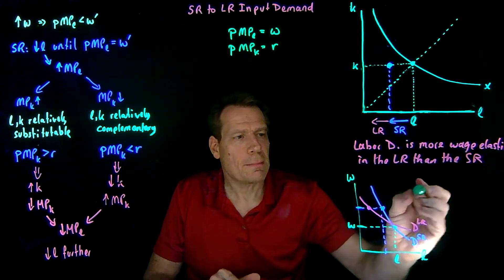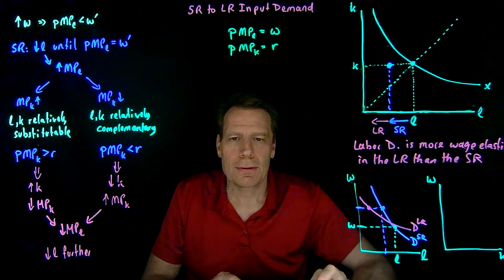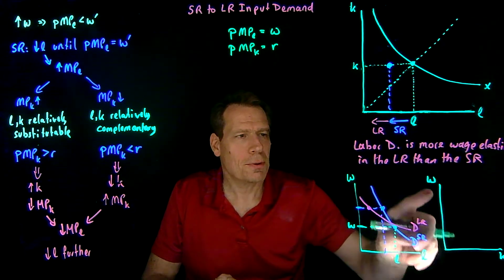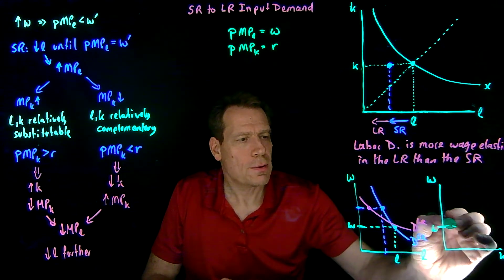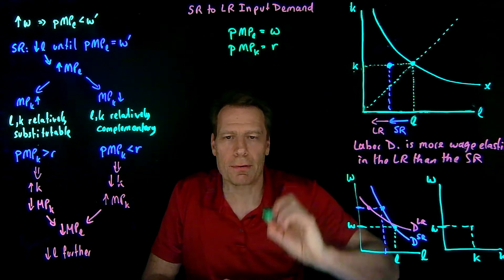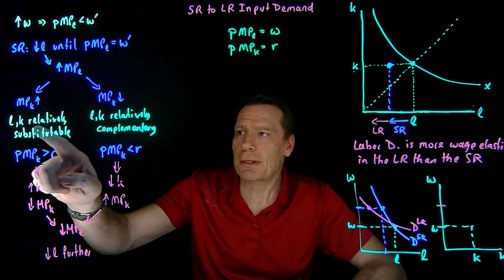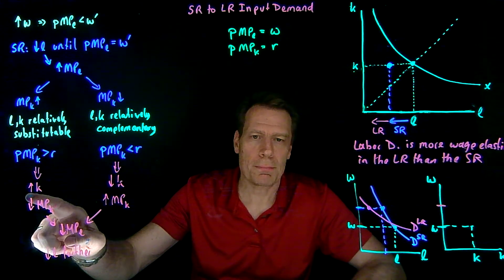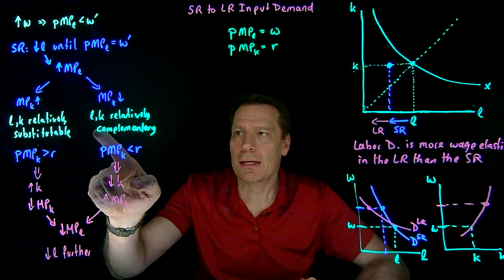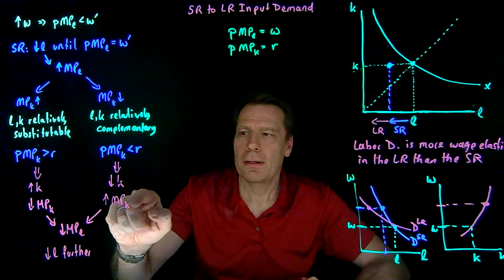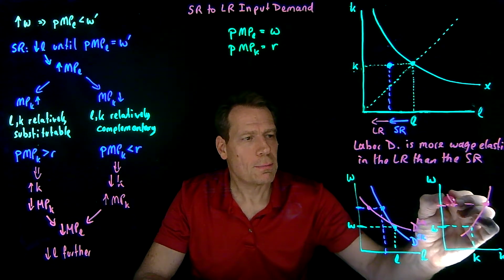We could also draw a demand curve for capital as the wage changes — a cross-price demand curve, because what's on this axis is the wage, not the rental rate. We started at the initial wage with a certain amount of capital. Then the wage went up. When labor and capital are relatively substitutable, that implies capital goes up as wage goes up, giving an upward slope. If, on the other hand, labor and capital are relatively complementary, then capital falls as a result of the increase in the wage, giving us less capital than before and a downward slope.